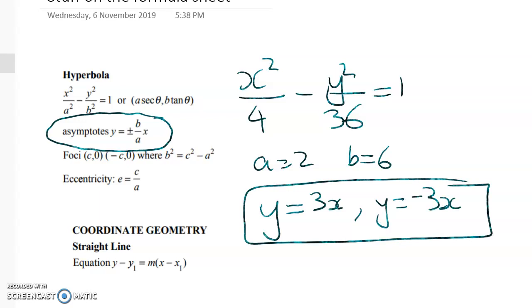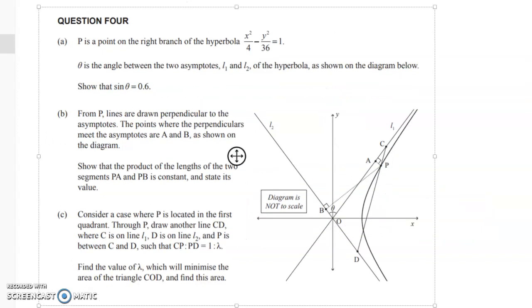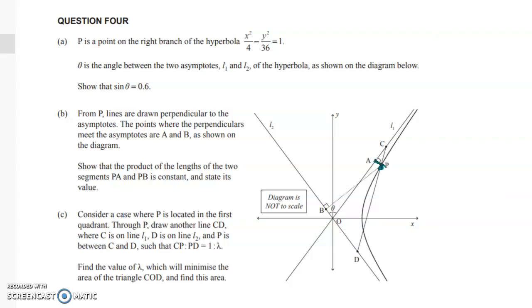Just doing that means you can start to make some progress with this question. Let's go back to the problem first. In part B we've got this point P and then we're looking at these lines - perpendiculars that meet the asymptotes. But we actually don't need to do that problem to start doing part C.